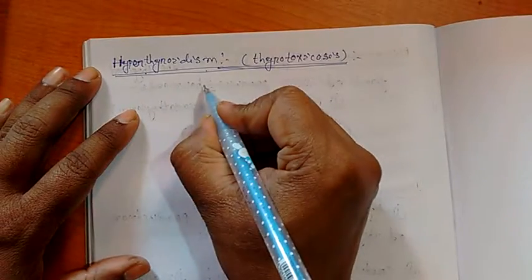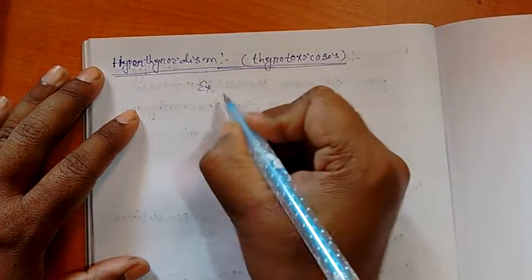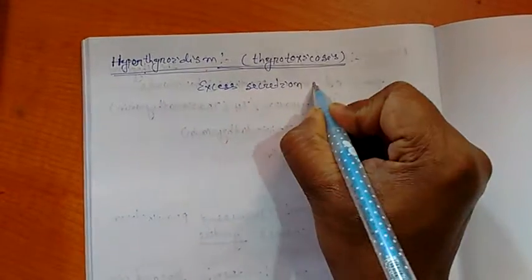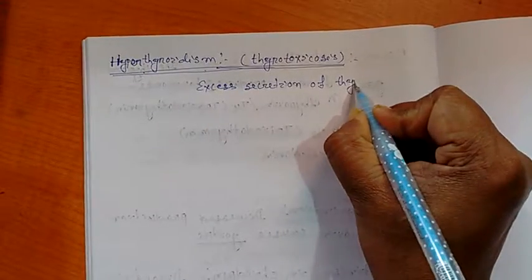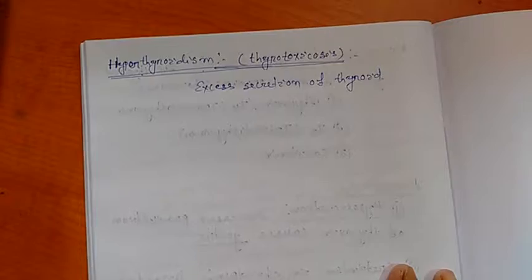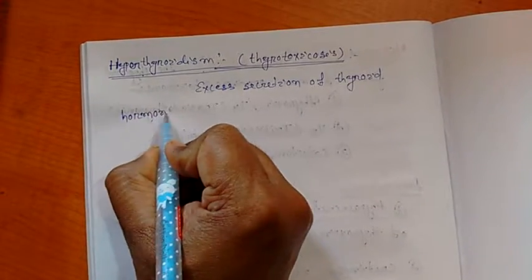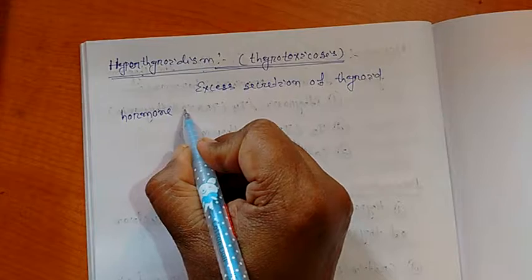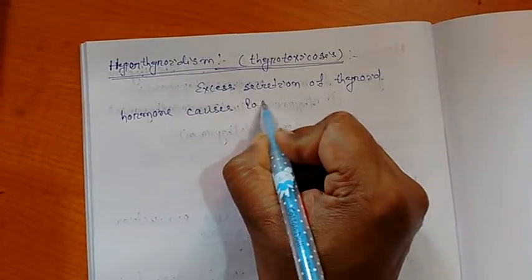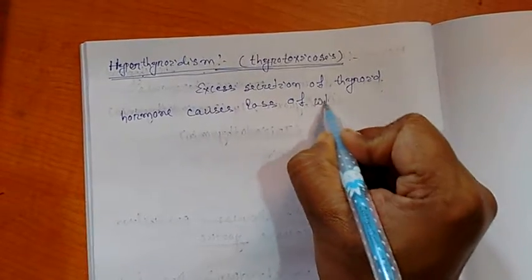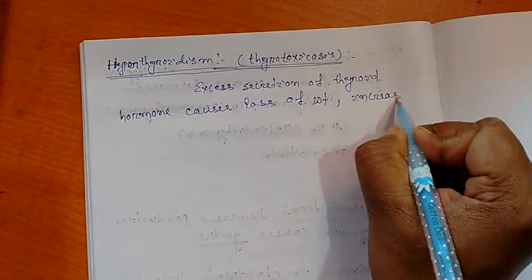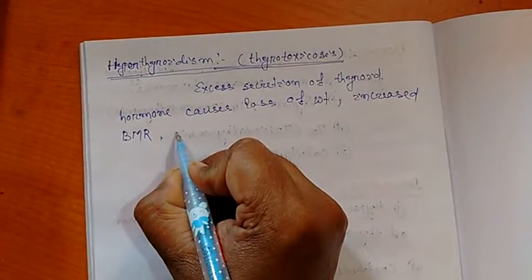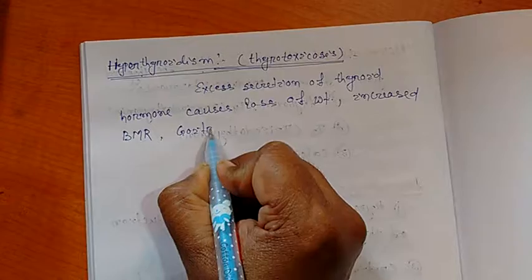It is hyper means excess secretion. So, excess secretion of thyroid hormone causes loss of weight, increased BMR that is basal metabolic rate, also causes goiter, etc.